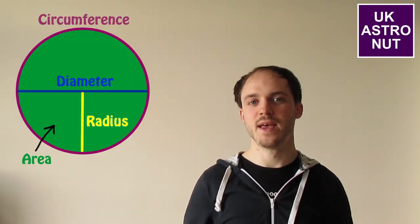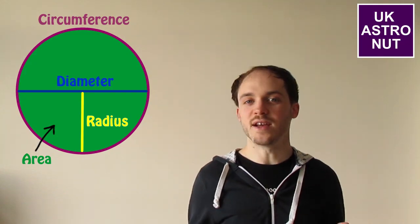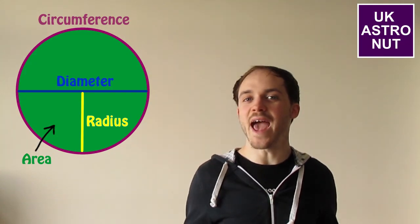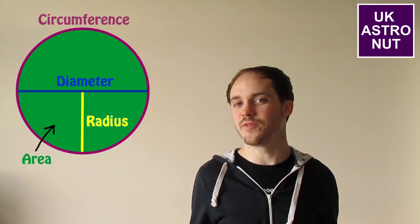Well, it's all to do with circles. A circle has lots of different characteristics — it has a radius, a diameter, an area, a circumference — and pi is the value which relates all of these characteristics to each other.